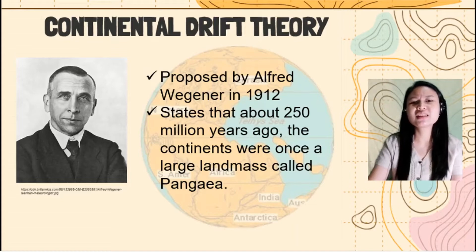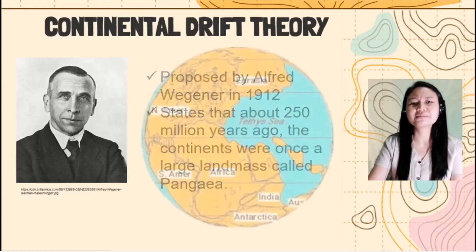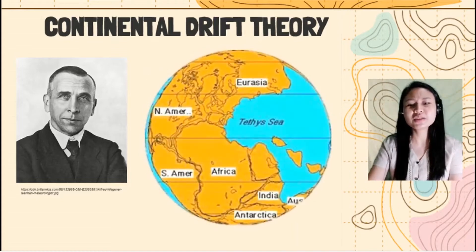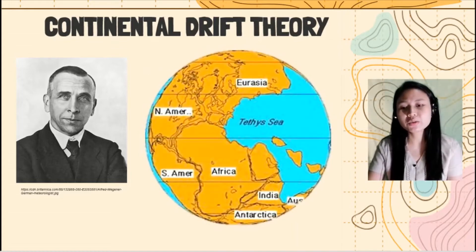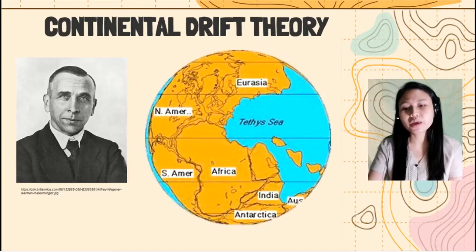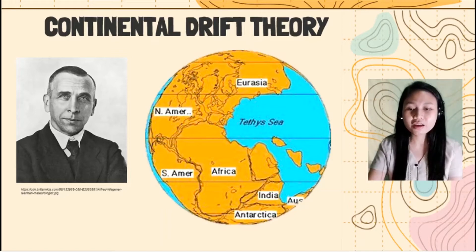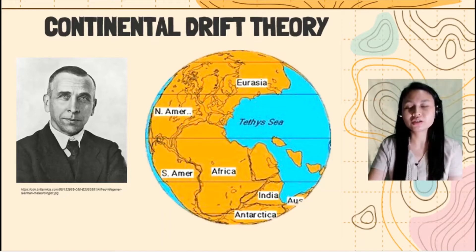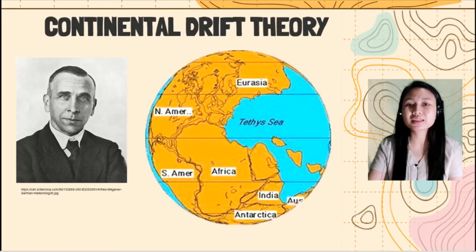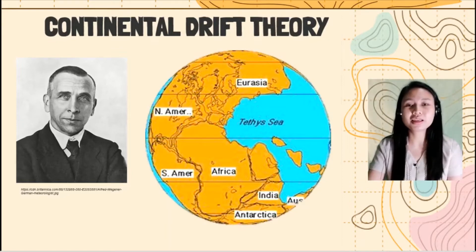So what does it look like? This is Pangea. As we can see here, we have Eurasia, North America, South America, and the other continents that are connected with each other. We can also notice that India is present here already.